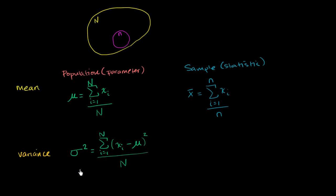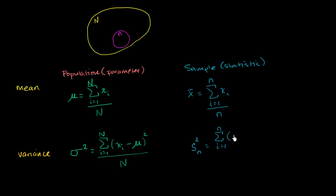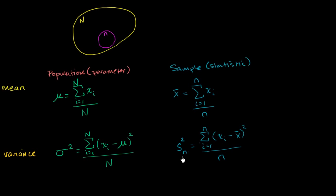Now we get to the interesting part: sample variance. There are several ways to calculate it. One way is the biased sample variance — the non-unbiased estimator of the population variance — denoted S with subscript n. We calculate it very similarly to population variance, but for our sample: for every data point in our sample, take that data point, subtract the sample mean, square it, and then divide by the number of data points we have.